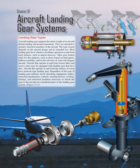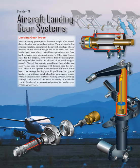Other gear feature skids for this purpose, such as those found on helicopters, balloon gondolas, and in the tail area of some tail-dragger aircraft. Aircraft that operate to and from frozen lakes and snowy areas may be equipped with skis. Aircraft that operate to and from the surface of water have pontoon-type landing gear. Regardless of the type utilized, shock-absorbing equipment, brakes, retraction mechanisms, controls, warning devices, cowling, fairings, and structural members necessary to attach the gear to the aircraft are considered parts of the landing gear system.